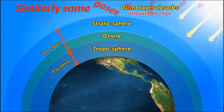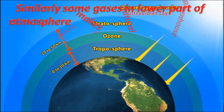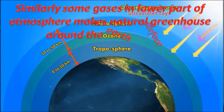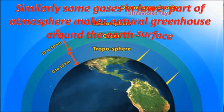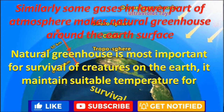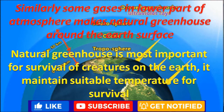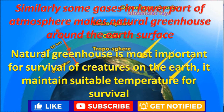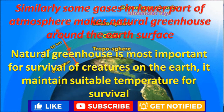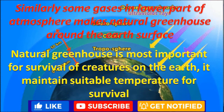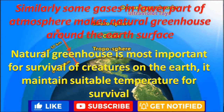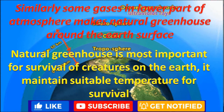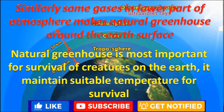Similarly, some gases in the lower part of the atmosphere mix to form a natural greenhouse around the earth's surface. The natural greenhouse is most important for the survival of creatures on the earth. It maintains a suitable temperature for survival. Some extent of the greenhouse effect is most important on the earth's surface for living creatures.